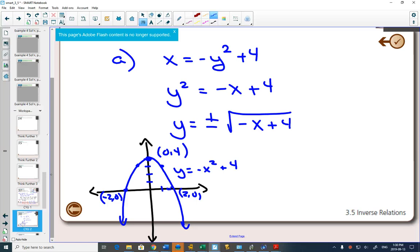In my opinion, I think that's going to be easier in this situation because I can take the vertex, which is at 0, 4. If I switch my x and my y, I'm going to get 4, 0. I can take my x-intercepts,